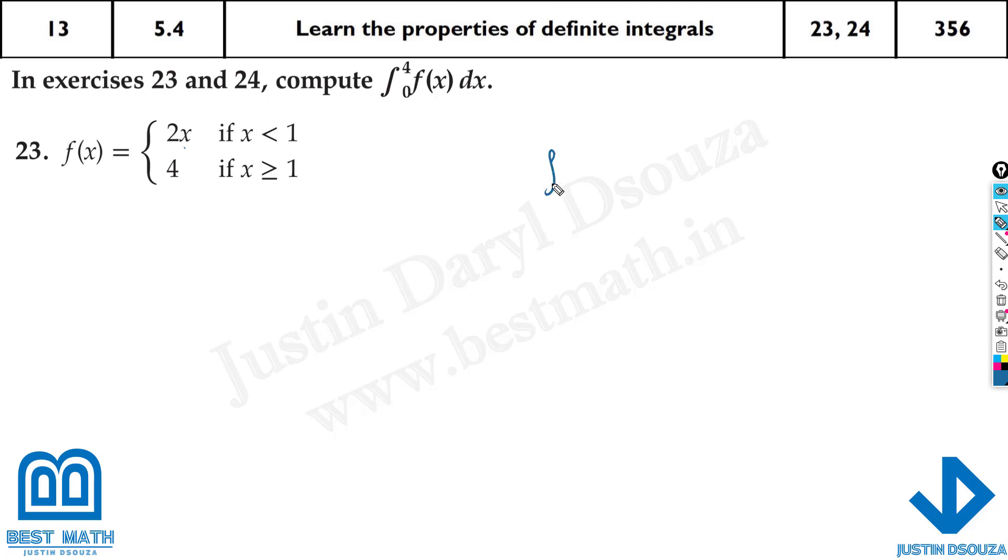So here we have 0 to 4 of f, but we cannot have this integral as one piece. We have to split it up from 0 to 1. From 0 to 1, where x is less than 1, f(x) will be 2x dx, plus from 1 to the upper limit 4, it is 4 dx.